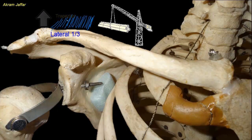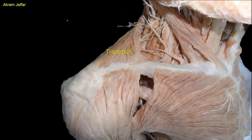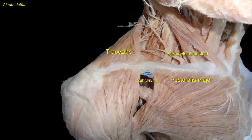The clavicle also provides attachment for other muscles, including subclavius on the inferior surface, sternocleidomastoid, whose clavicular head is attached to the superior aspect of the medial third, pectoralis major to the anterior aspect of the medial half, and deltoid muscle to the anterior aspect of the lateral third.